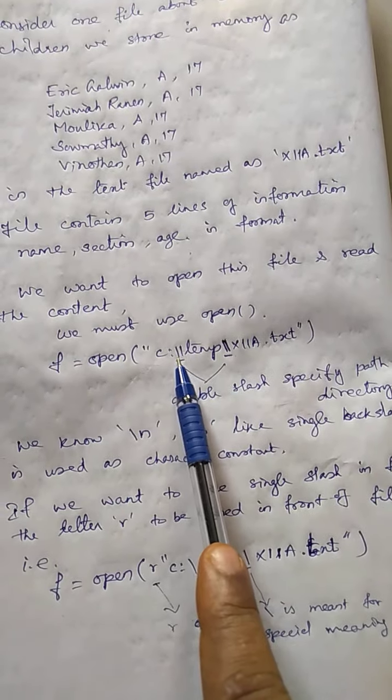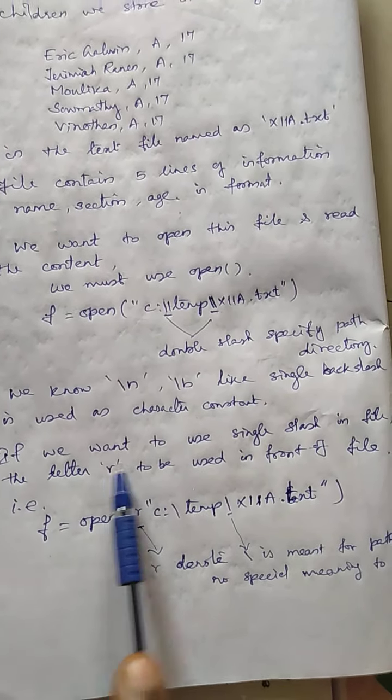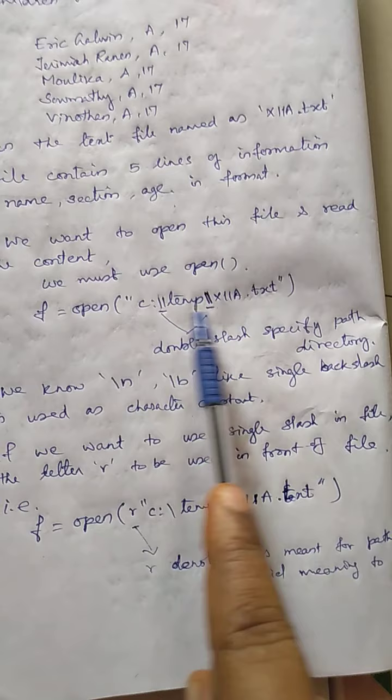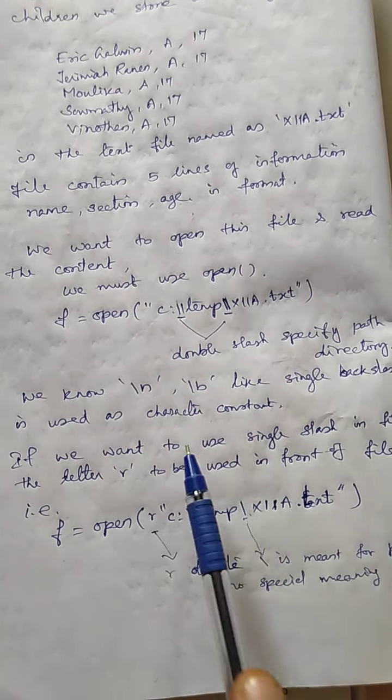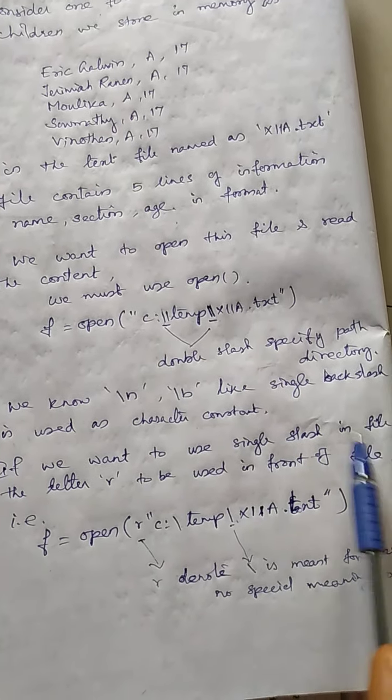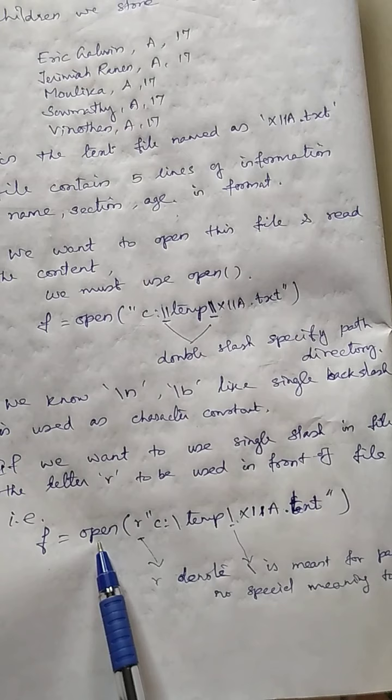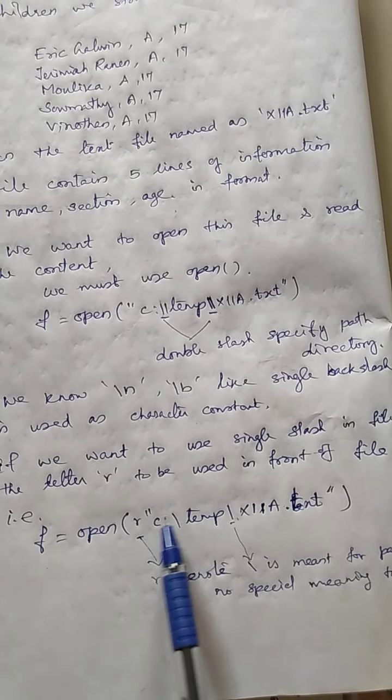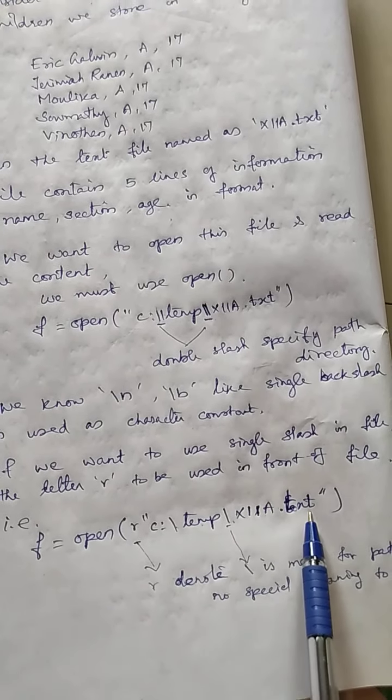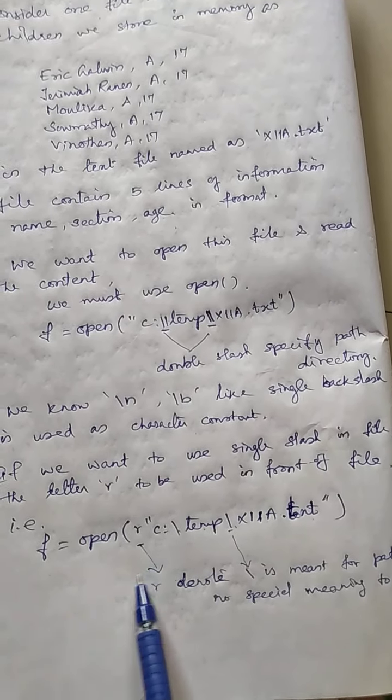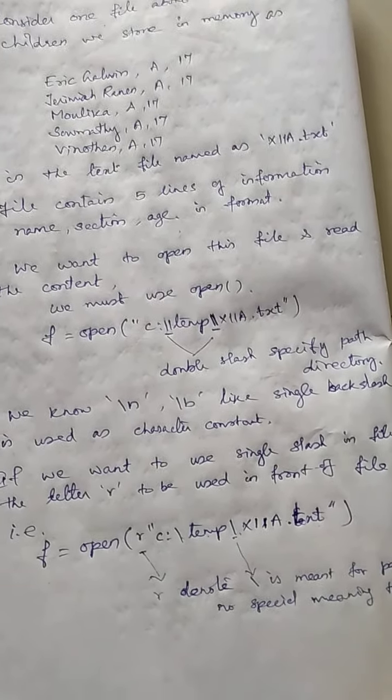Suppose you want to use the directory path with a single slash. Then what we have to do? We must use one letter R before, that is in front of the file name. Instead of using double slash, you want to use the slash only to refer the directory folders. Then what we have to use? When we want to use a single slash in our file, the letter R to be used in front of the file. That means file object equal to open, then R character followed by the file name in quotation. That is C colon in that directory folder temporary. In that folder 12A dot TXT is a file name. So here this R character means the slash should not be considered as an escape sequence. The slash refers to the file folder path only. Like that.